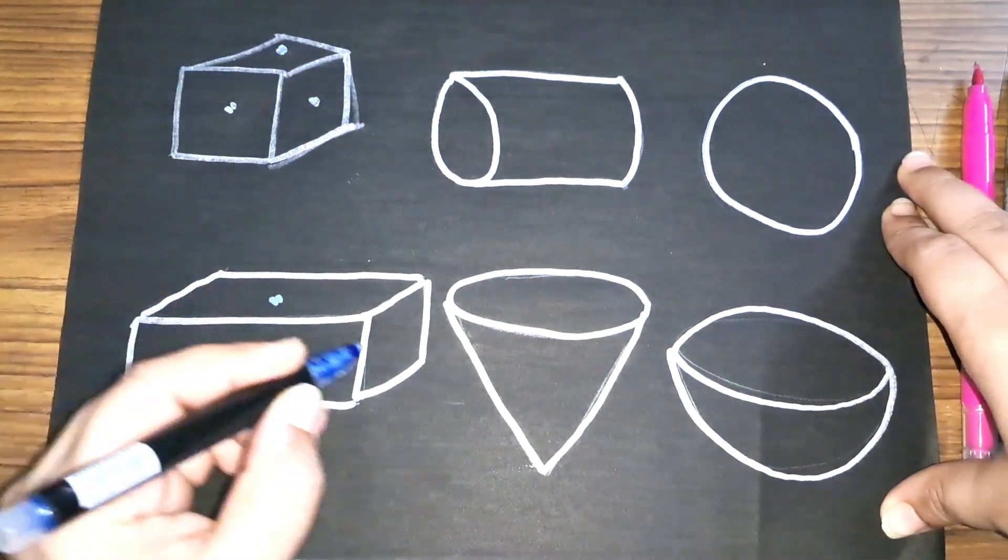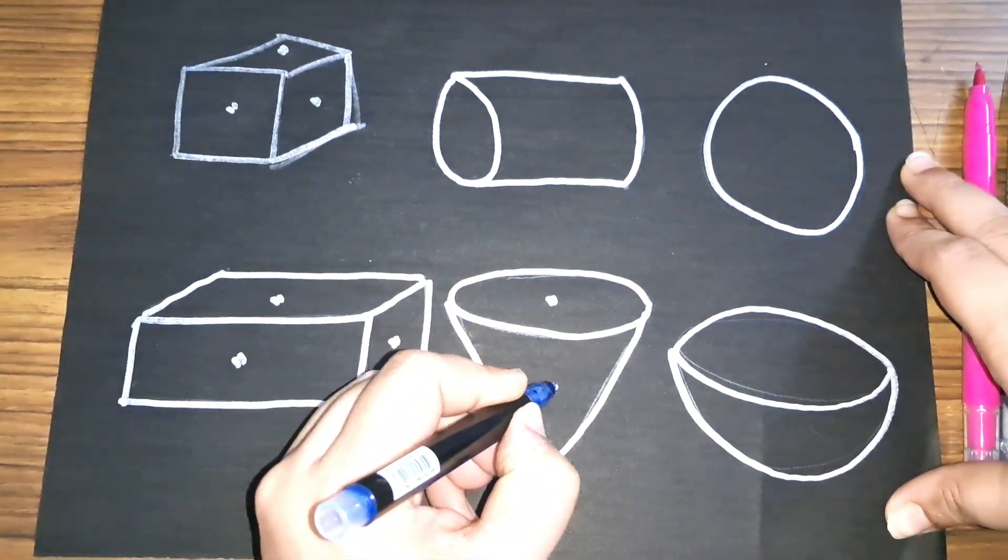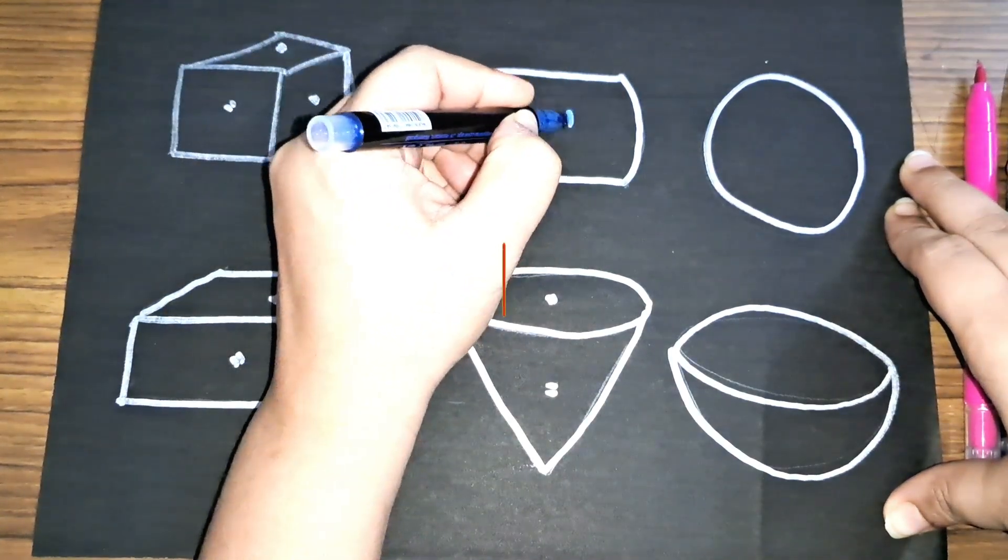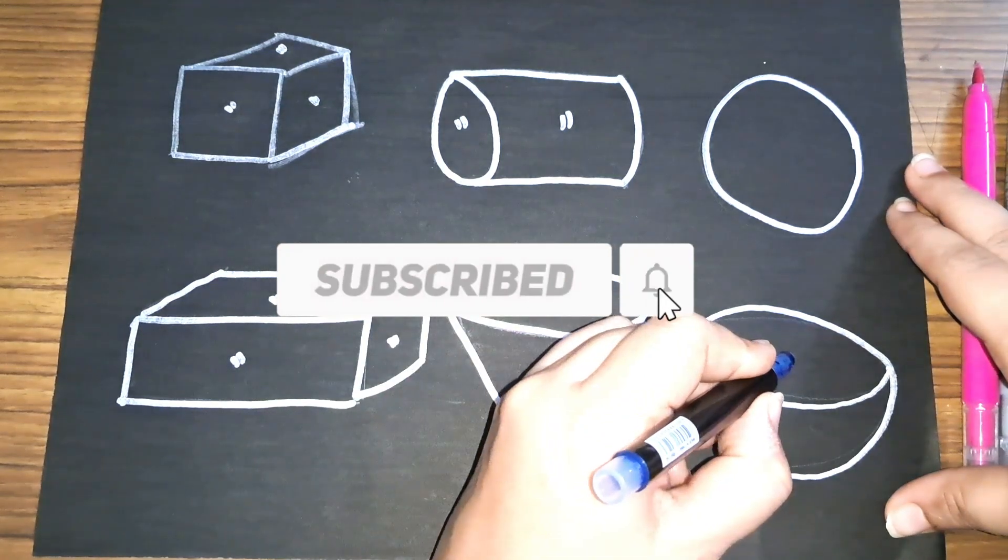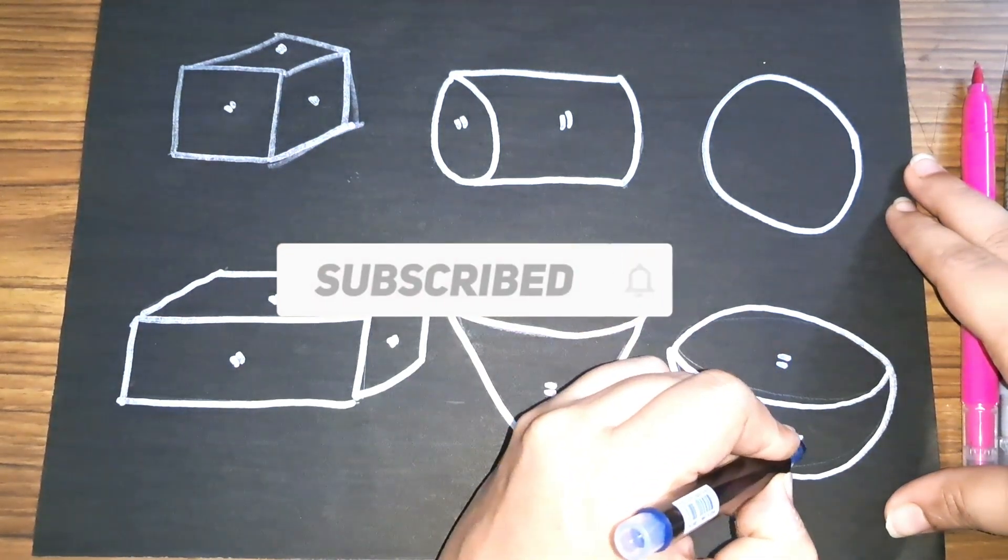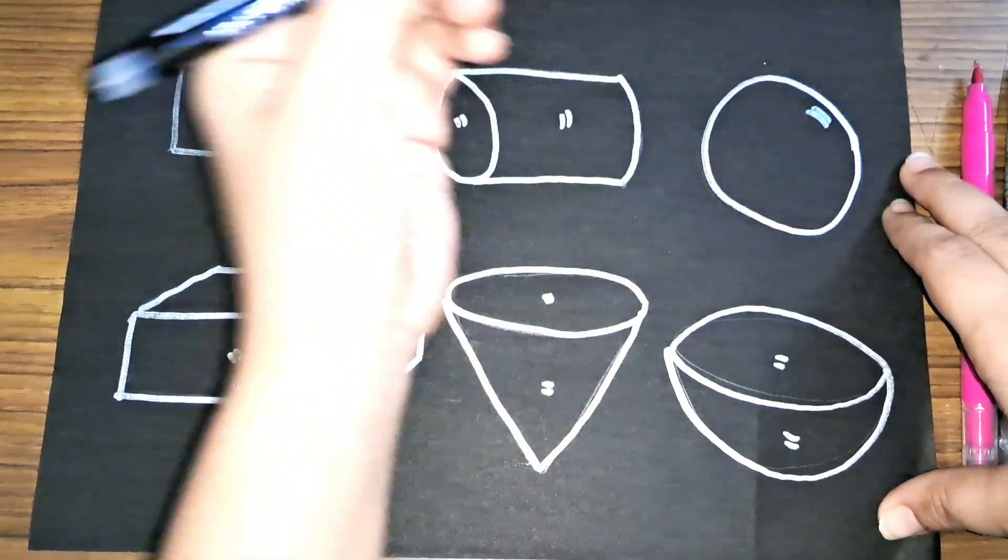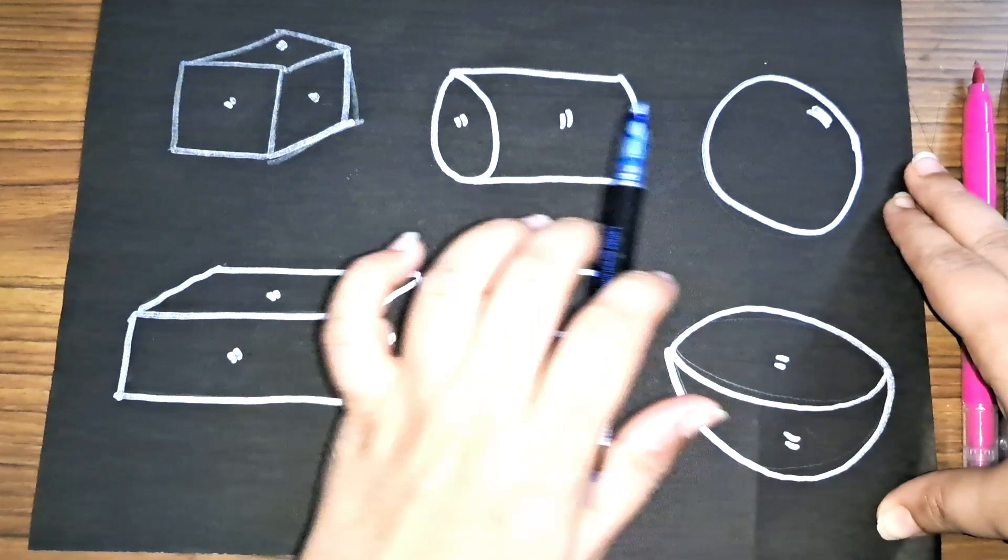Cube. Cuboid. Cone. Cylinder. Hemisphere. Sphere. These are 3D shapes.